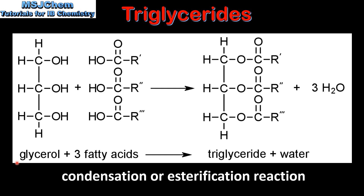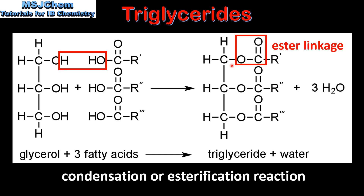Next we look at the formation of a triglyceride. Triglycerides are formed from a molecule of glycerol and three fatty acids. The OH group on the fatty acid and the hydrogen atom on the glycerol molecule react together to form a molecule of water. This is known as a condensation or esterification reaction. Because there are three fatty acids bonding to the glycerol molecule, three molecules of water are produced. The bond between the glycerol molecule and the fatty acid is called an ester linkage.